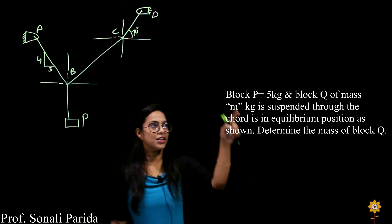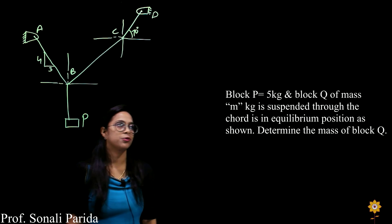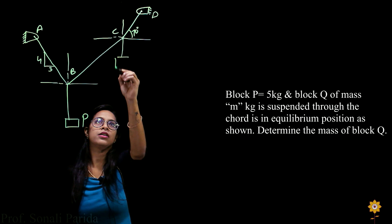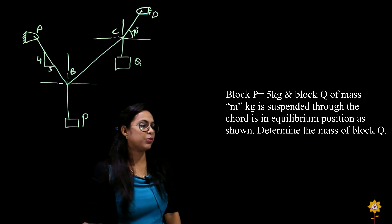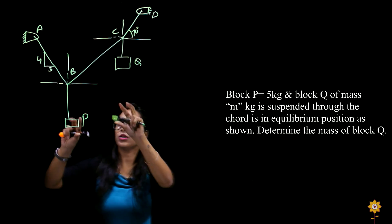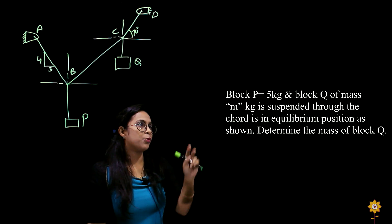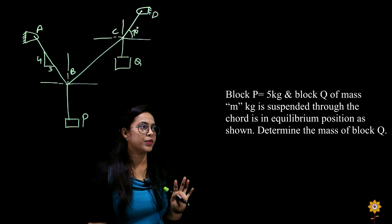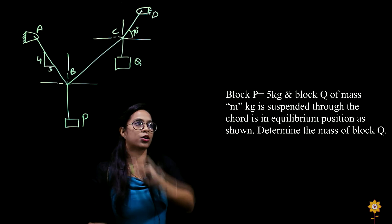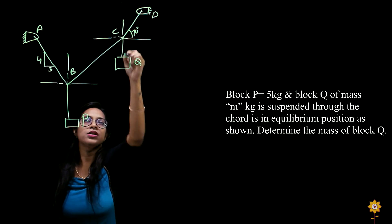This is the question. We have block P which is weighing 5 kg and we have block Q which is m kg, and these are suspended by chords. P and Q are suspended by these chords and they are in equilibrium. We have to find the tension in the chords.